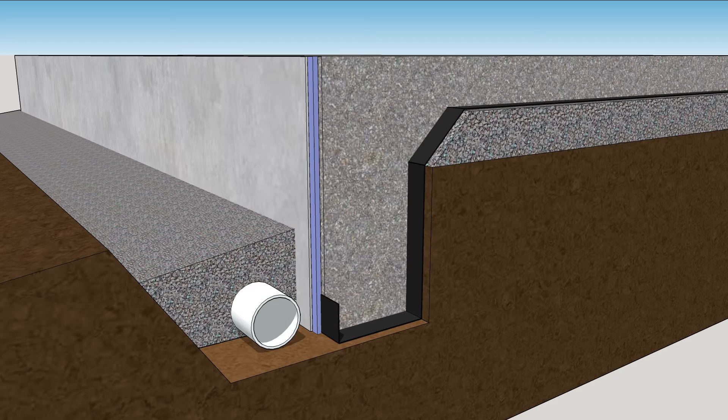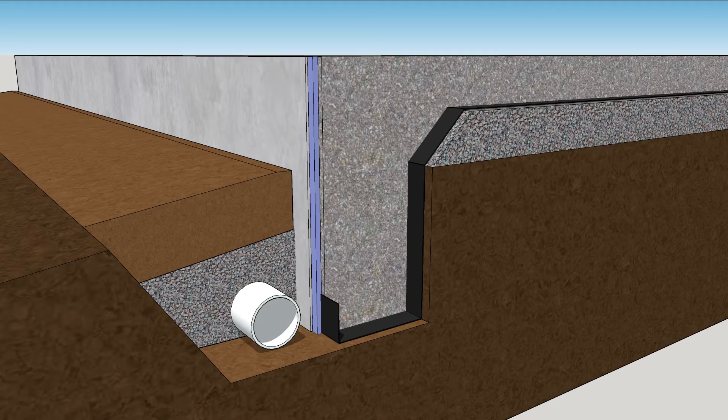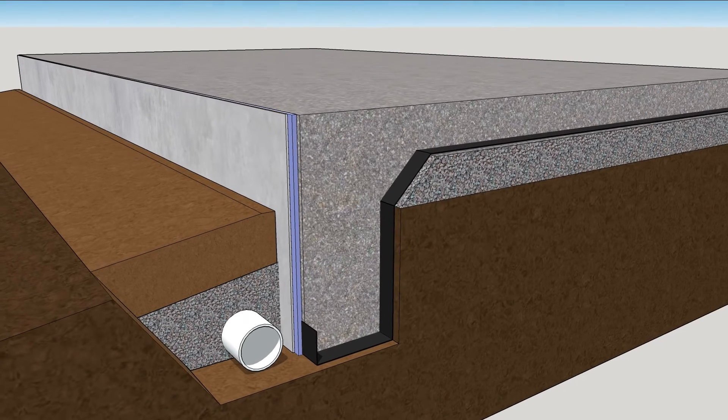Install a footing drain in a bed of gravel. Backfill the hole and frame the walls on top of the slab.